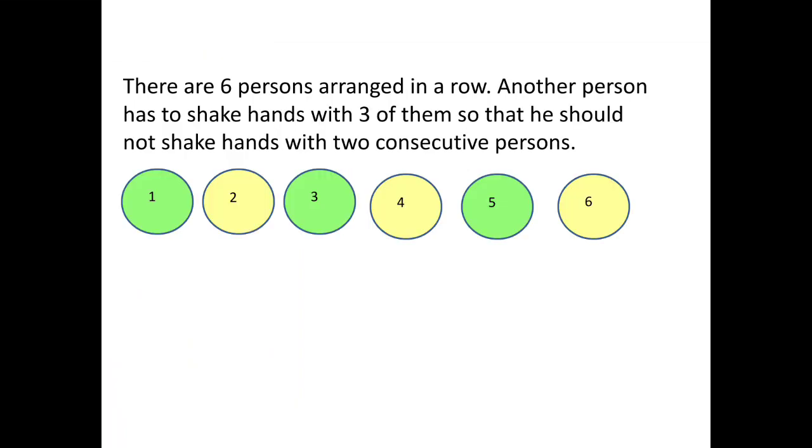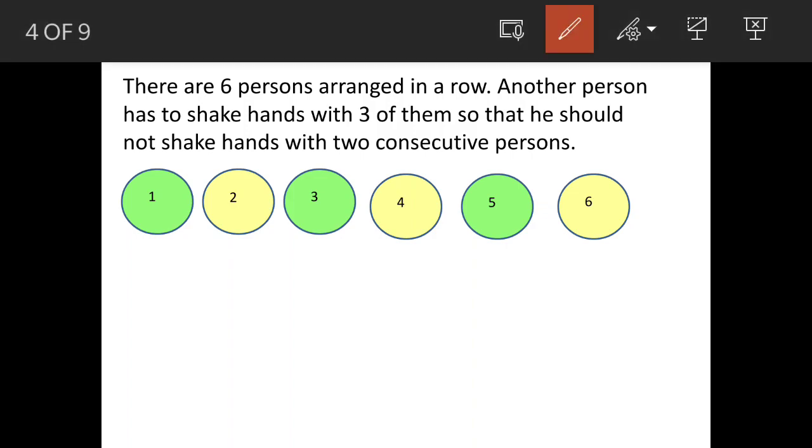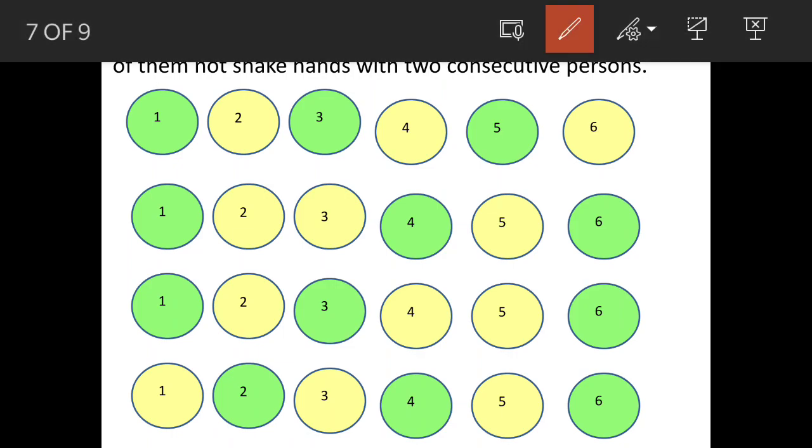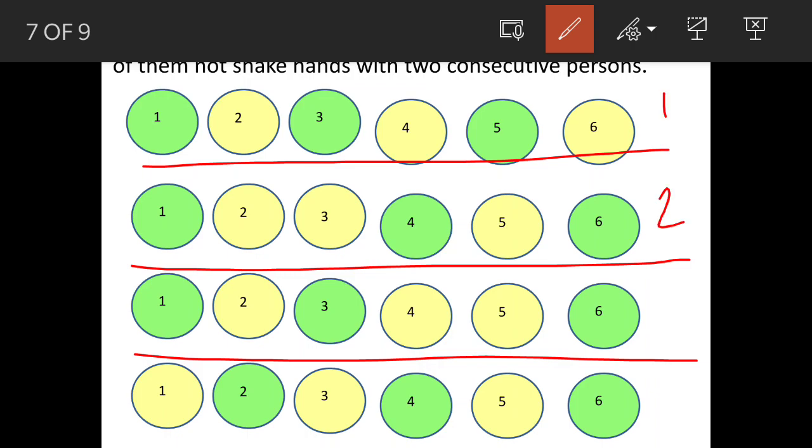We will quickly see the graphical explanation. Six people in a row, another person, the seventh person, has to shake with three of them. First arrangement: one, three, five. Second arrangement, third arrangement, fourth arrangement. So these arrangements are one, two, three, four. These are the people he is shaking hands with in green circle, and people who are left out are yellow.